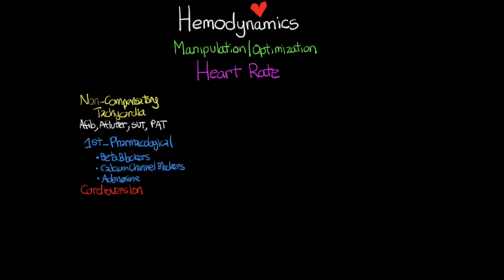The next situation in which we optimize heart rate is ventricular tachycardia, or V-tach, and this is important because we're going to want to treat this immediately. There are two pathways: if the patient is stable, we look at lidocaine or amiodarone. But if your patient is either unresponsive to those medications or they are unstable, then we move to cardioversion.